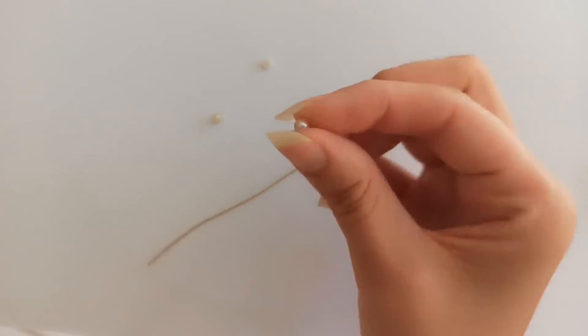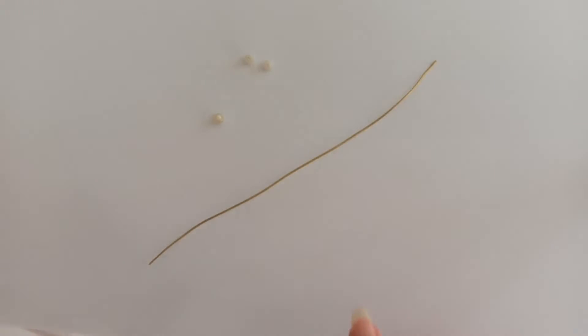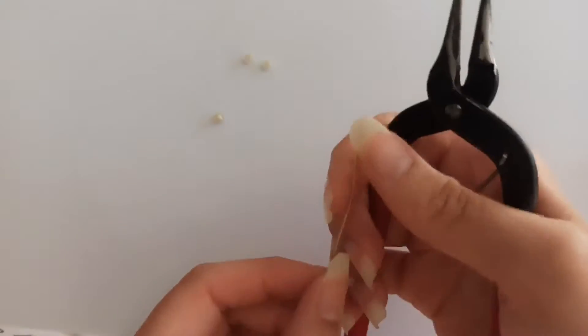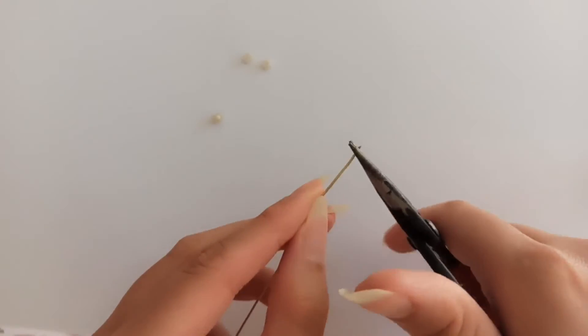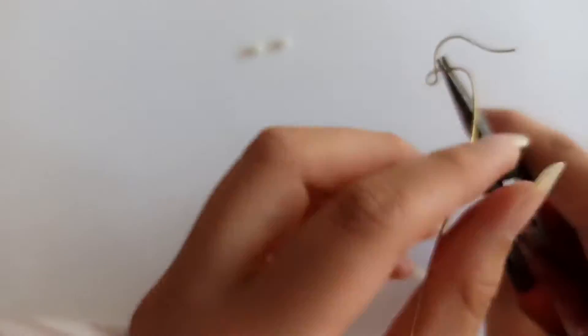Cut the 0.8 wire. The length should be the same as you have drawn. To shape the wire, use round nose pliers. Just follow the pattern you have drawn.